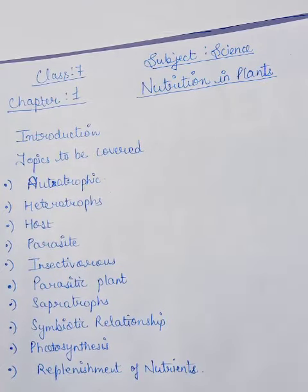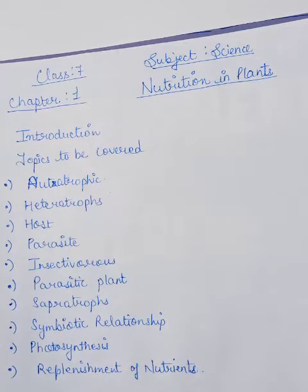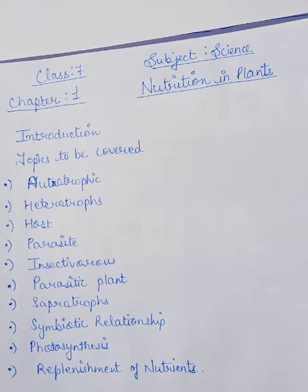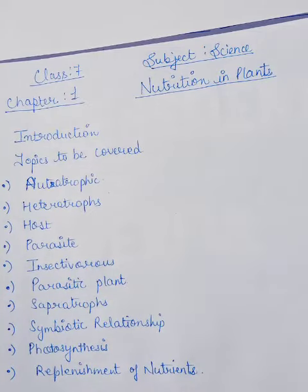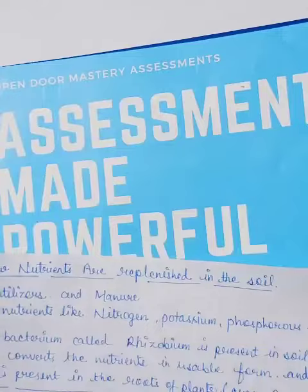First of all, let me tell you what topics we have to cover in this chapter. We will discuss the introduction of the chapter, then autotrophic, heterotrophs, host, parasite, insectivorous, parasitic plants, saphrotrophs, symbiotic relationship, photosynthesis, and replenishment of nutrients. In this chapter, we will study all these topics.